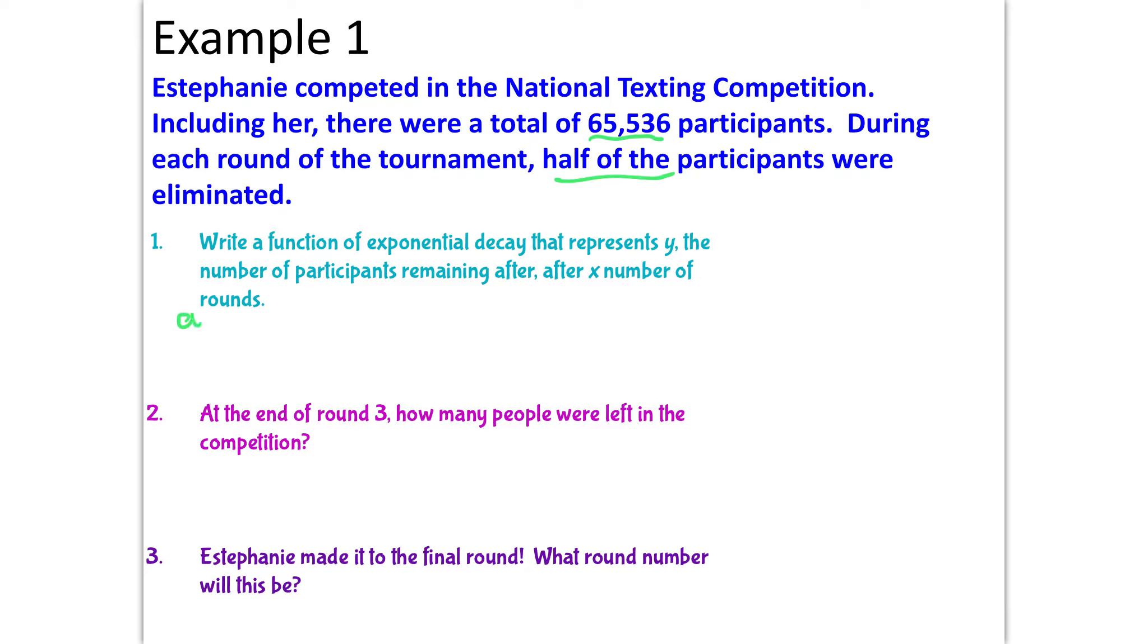So what do we know? We know that a is 65,536 because that's our initial amount. Now, the rate might be a little bit challenging to get, but it says half of the participants were eliminated. That half, so one half, is equal to 50%, as a decimal is 0.50. So my rate is 0.50. So y equals 65,536 times 1 minus, now because we're decaying, you're losing half the participants, minus 0.50 to the x power.